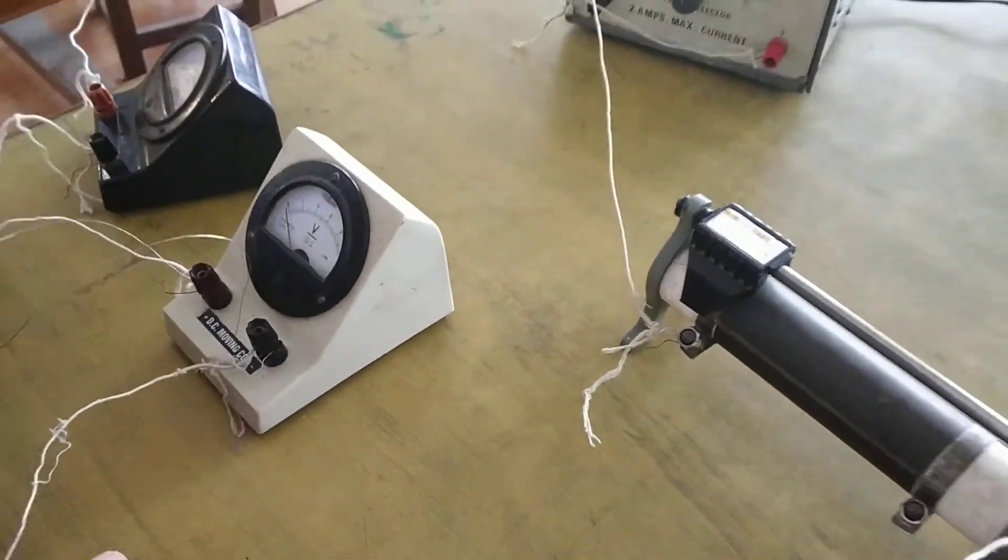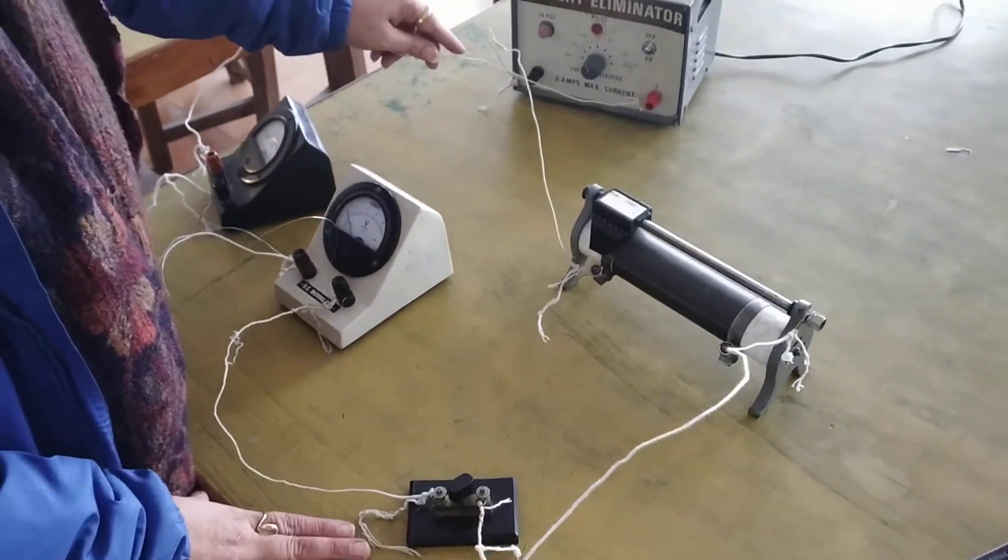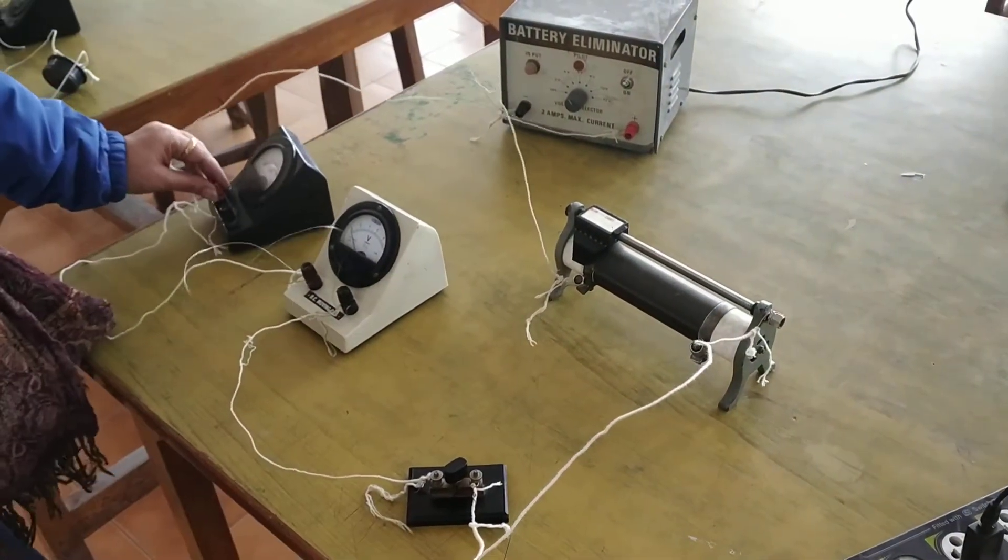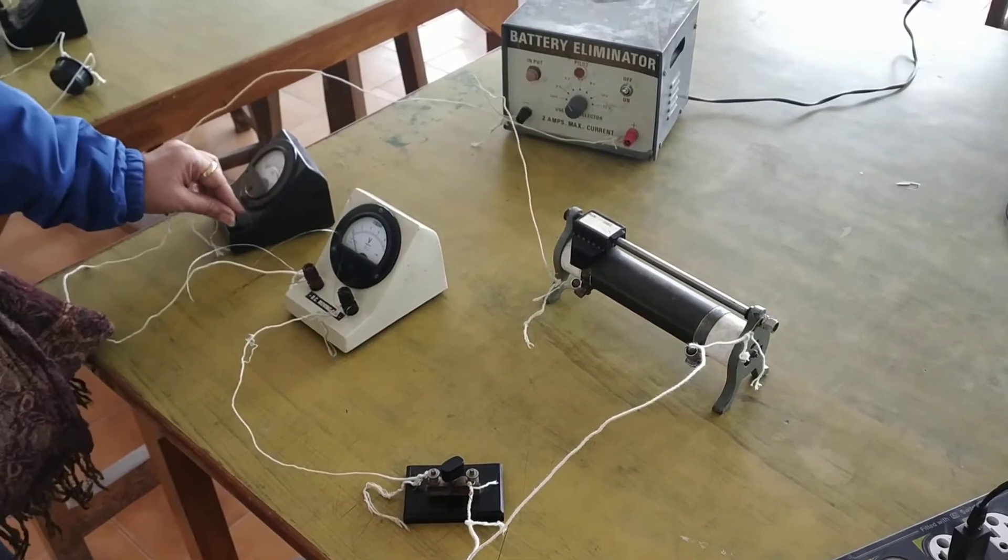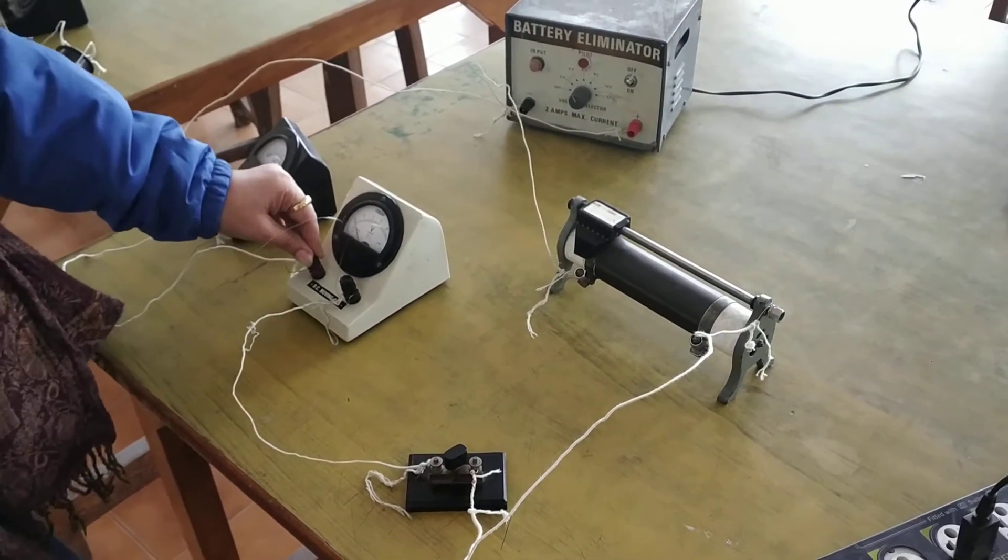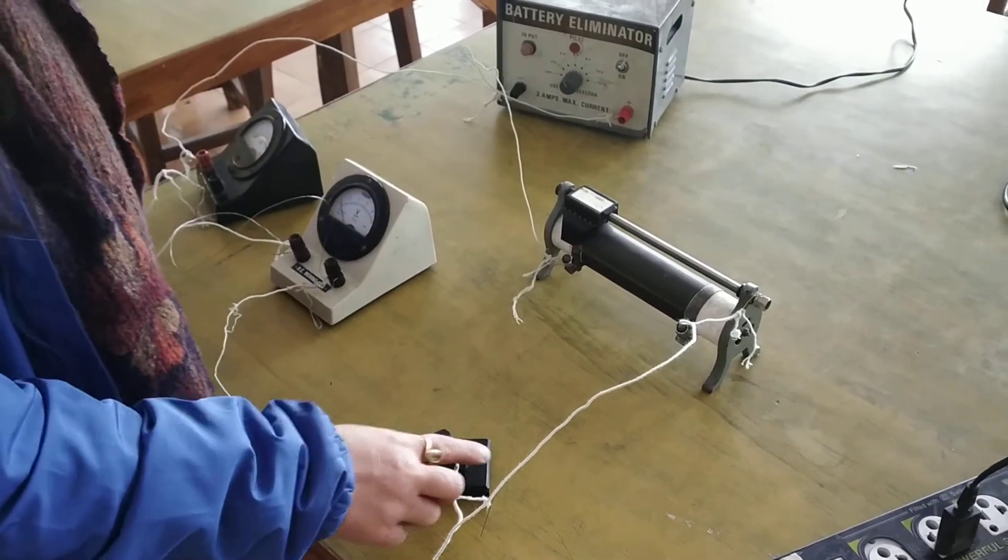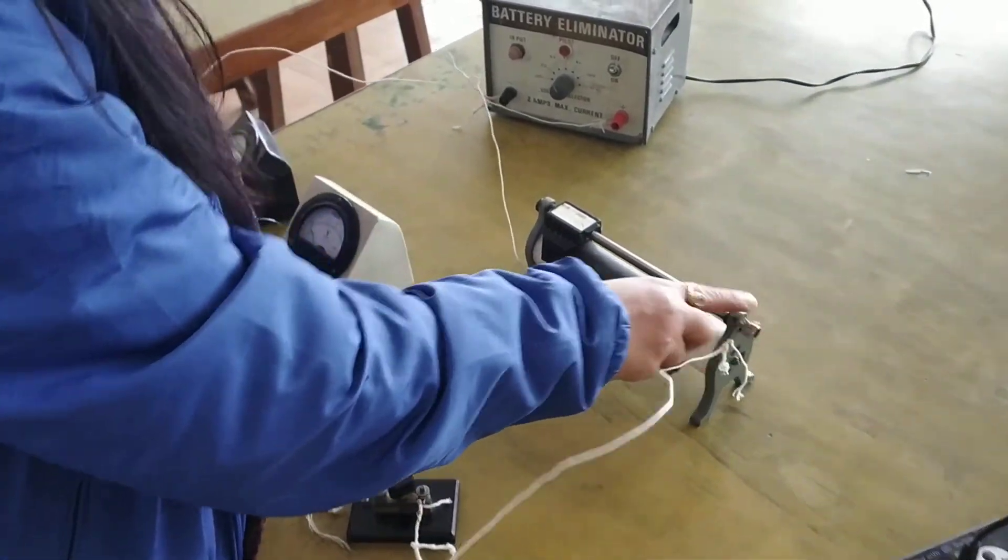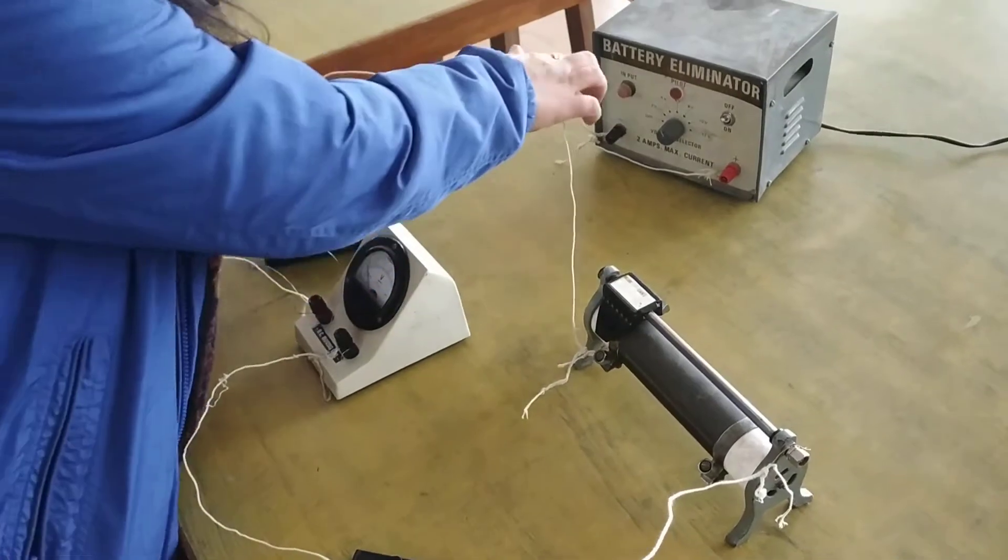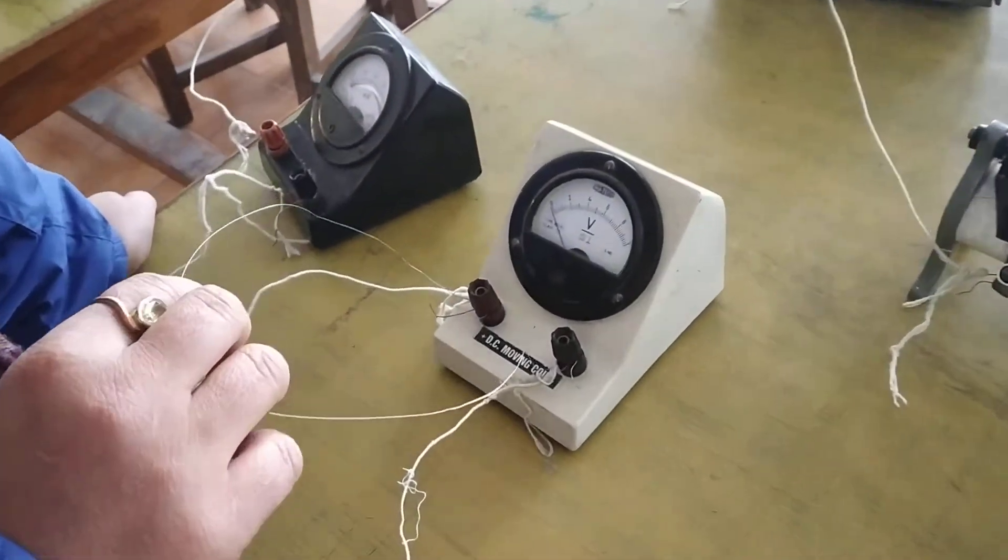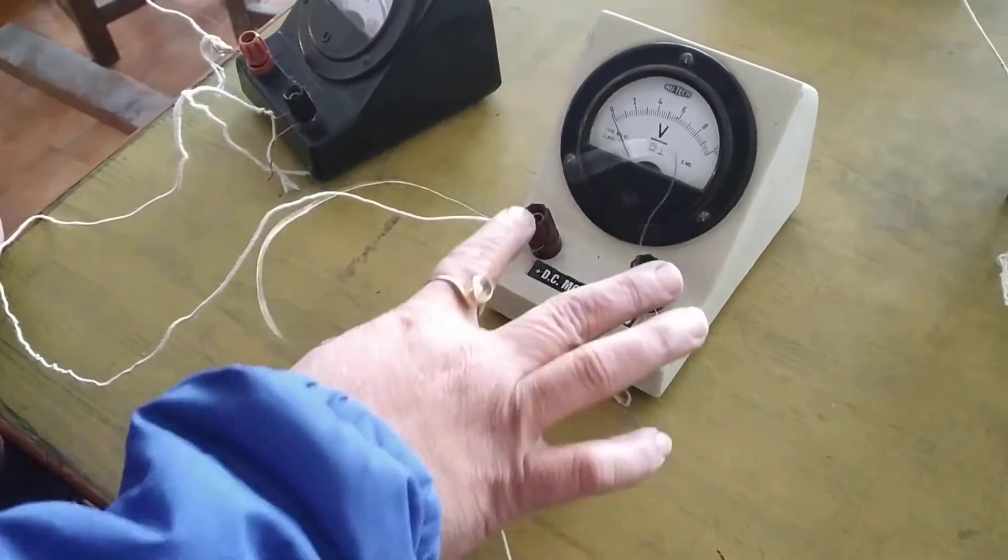Connect the circuit to verify Ohm's law. The positive terminal of the battery is connected to the positive of the milliammeter. The negative is connected to the positive terminal of the voltmeter. The voltmeter negative is connected to the key. The key is connected to the rheostat top terminal. The bottom terminal is connected to the negative of the battery. The resistance wire is connected across the voltmeter.